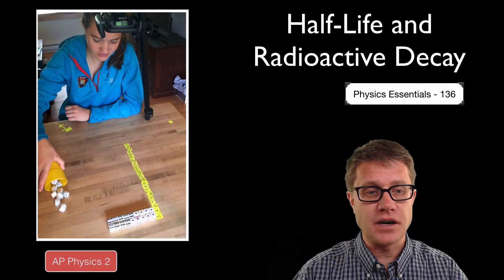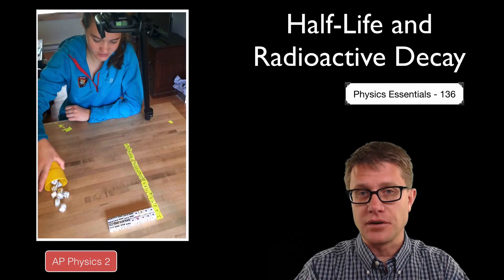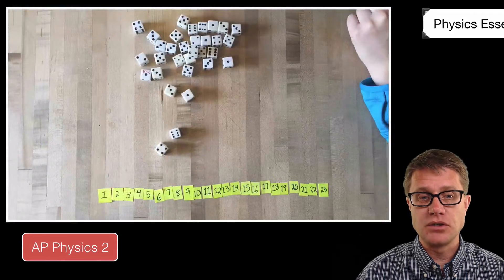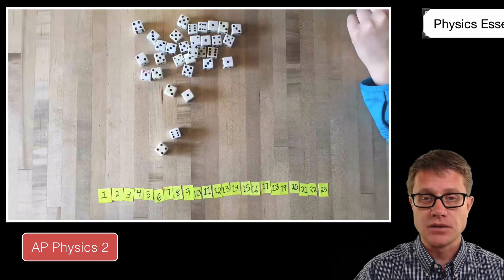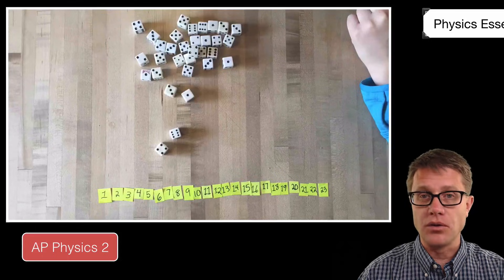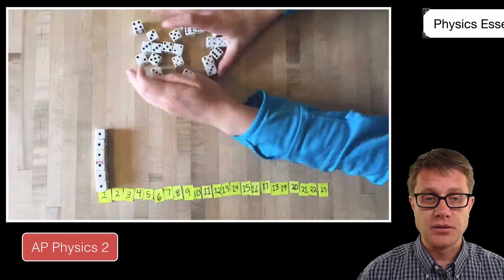To model that, my daughter and I started rolling some dice. We had 32 dice in the cup. What she would do is roll the dice and then pull all of a certain number out. So in this first simulation she is going to pull all the ones out.